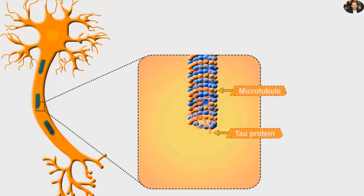In healthy neurons, there is a natural protein called tau protein which maintains the integrity of cellular microtubules.